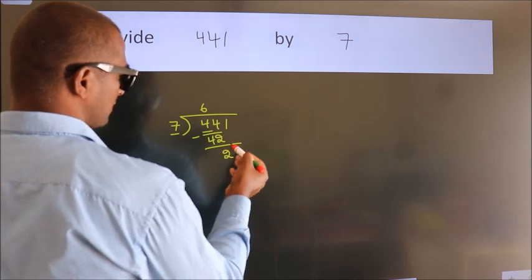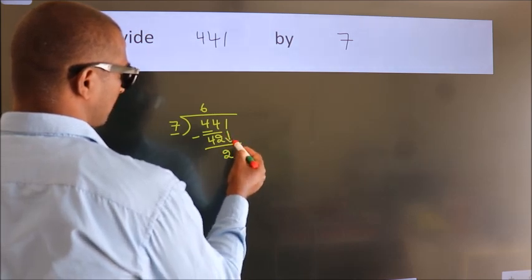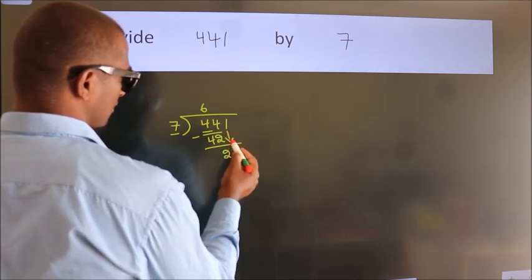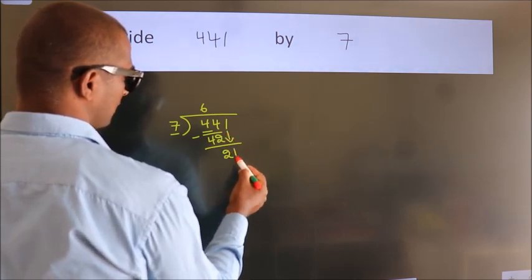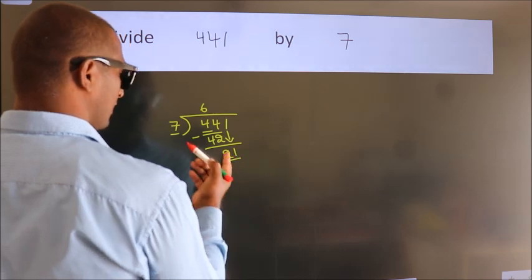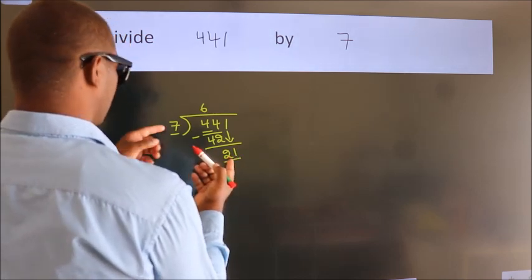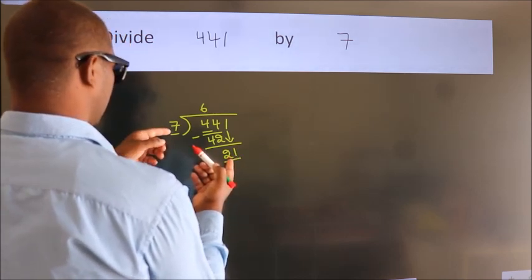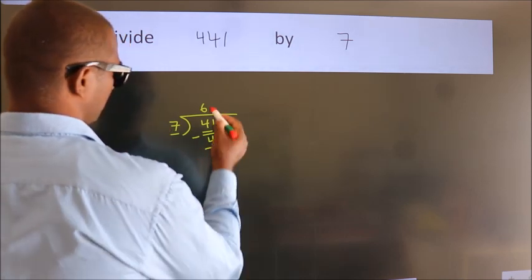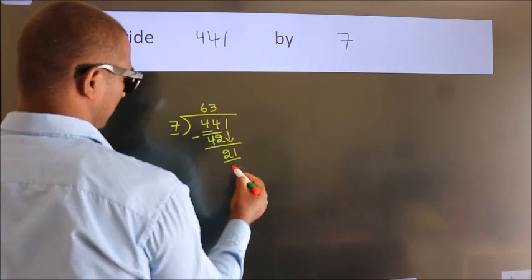After this, bring down the beside number. So 1 comes down, giving us 21. When do we get 21 in the 7 times table? 7 threes are 21.